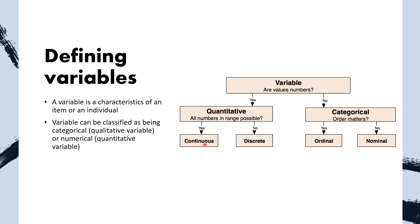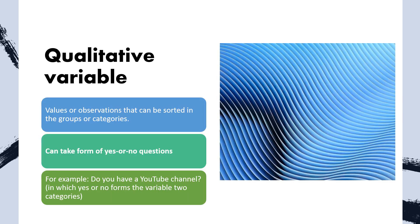Quantitative variables are all numbers across a range of possible values. Values that can be sorted into groups or categories are qualitative — another name is categorical variable. For example, they can form yes-or-no questions. If I ask you 'Do you have a YouTube channel?' or 'Do you have a cell phone?', you can either say yes or no — these two answers form the variable's categories.